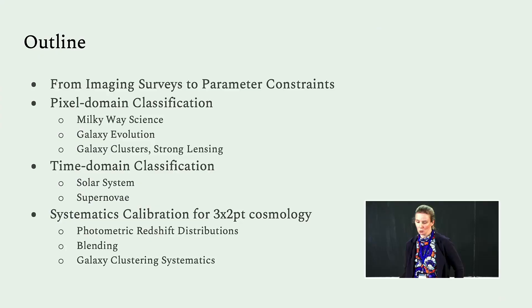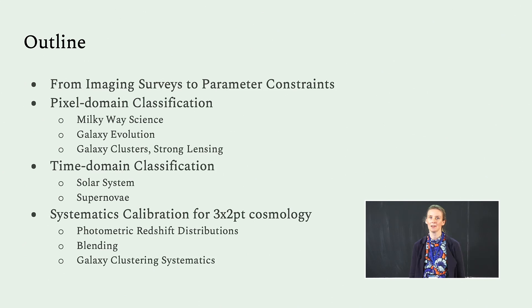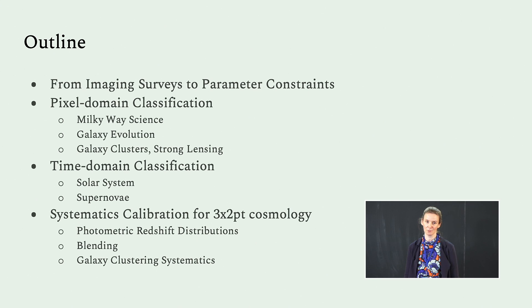I'll start out with a quick outline of the landscape of imaging surveys and how we go from those surveys to parameter constraints, then go through a few examples from the Dark Energy Survey, starting with pixel domain classification for different science cases, then a few short time domain classification examples, and towards the end I'll focus on systematics calibration for lensing and clustering cosmology analysis.